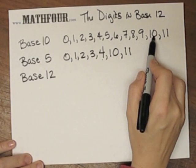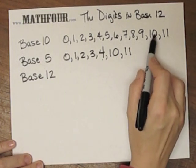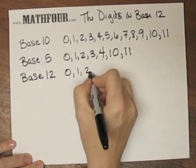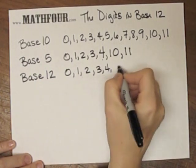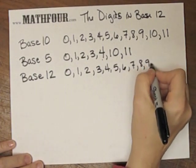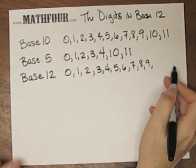In base 12 though, we can't use these two because these are actually separate. So we do 0, 1, 2, on up. See how fast I can write them. And I need a 10 and 11.